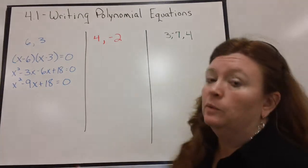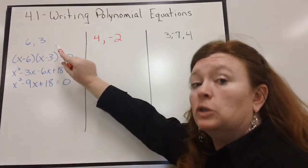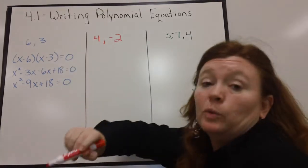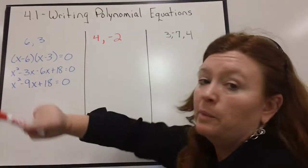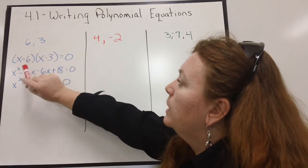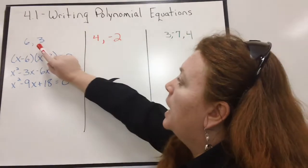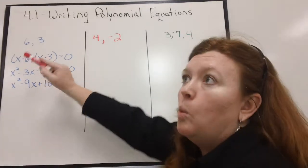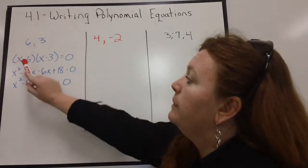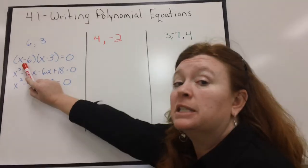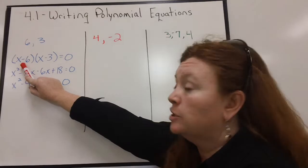For example, we have 6 and 3. If 6 and 3 are the solutions, what would have been the original equation? Let me close this, I don't want red. I'm marking all over my board.